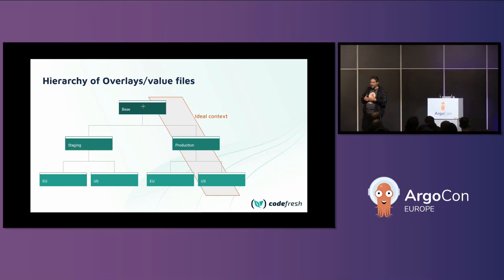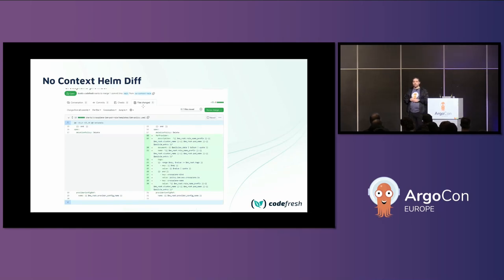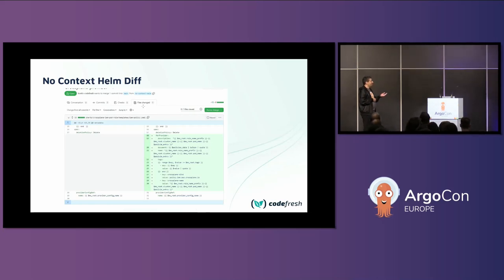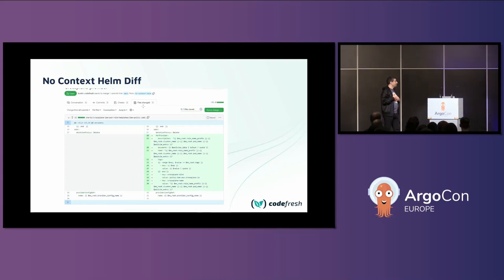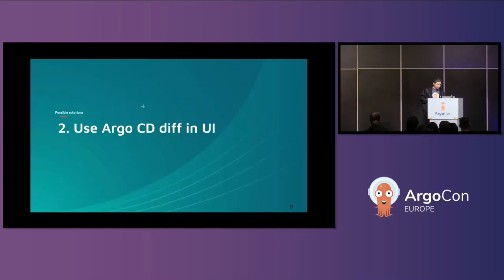Whenever a pull request comes in, you only see the things that changed, but that's not what you want. You want to see the whole context — the entire change, not just the lines that changed. What you really want to see is the final rendered manifest. You don't care about the Kustomize line or the Helm value that changed; you want to see the final manifest. For Helm users with lots of templates, mentally running Helm in your head is not ideal. This is the core problem we're addressing today, and we'll look at four solutions — three that are not ideal and the perfect one I recommend.